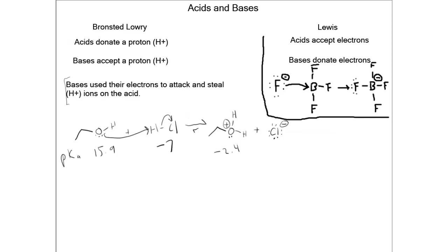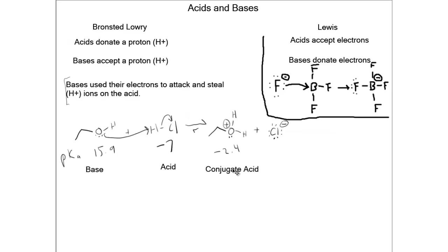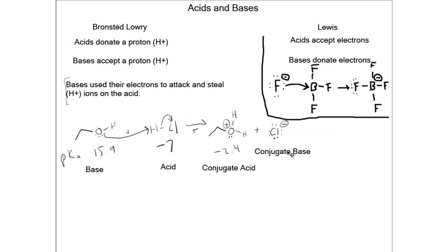Let's label the components of this reaction. We have an acid — in this case it was hydrochloric acid that donated its proton. We have a base — in this case it was ethanol that used its electrons to attack and steal the hydrogen ion on the acid. We have a conjugate acid — we gave the base an extra proton, so it's now capable of donating that proton. And then we also have a conjugate base, which is our chloride anion.